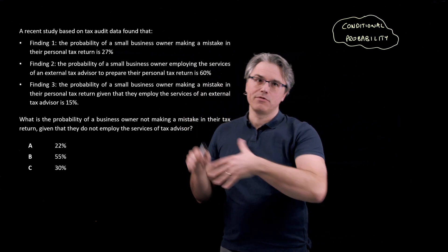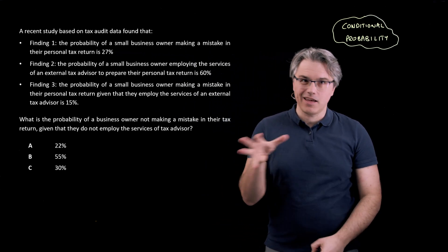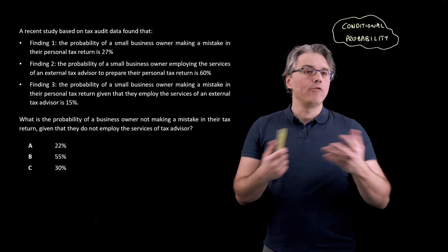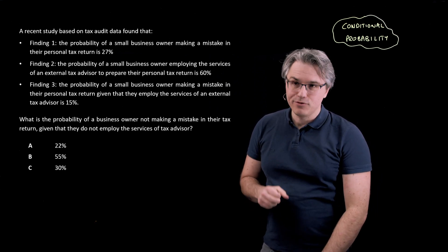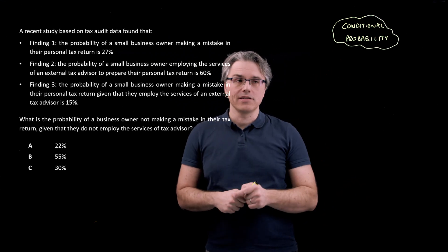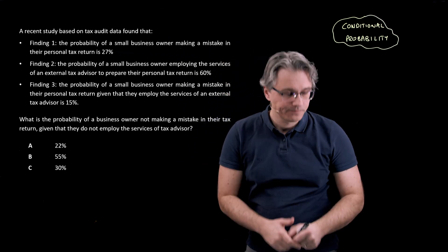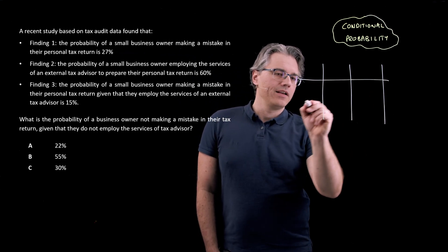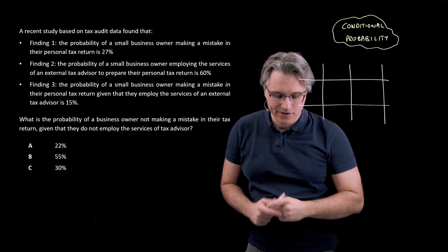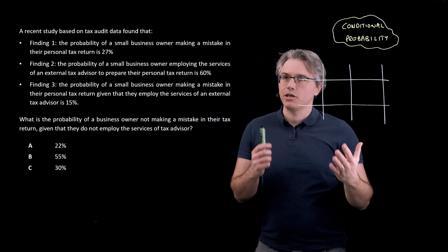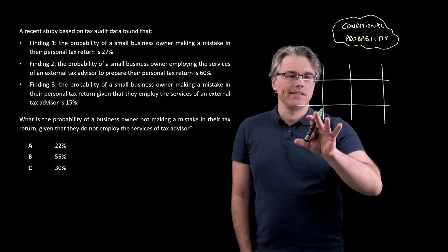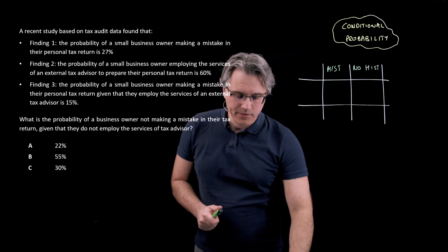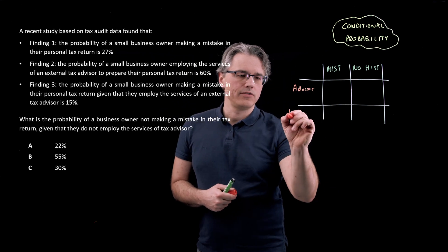I've already tackled this scenario in the previous question, so you may want to go back and look at that one — it was a question on joint probability. However, seeing as I wiped out everything from that previous solution, I'm still going to draw certain things. I'm going to visualize the problem by drawing a table — the same table as in the previous question. It's a table where I'm going to visually write out, like you would in Excel, certain phrases like 'mistake' or 'no mistake', and over here in the rows I'm going to say 'advisor' as opposed to 'no advisor'.